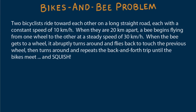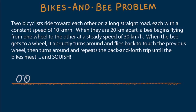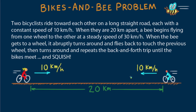Here's a problem that's a stumper for many people. Two bicyclists ride toward each other on a long straight road, each with a constant speed of 10 kilometers per hour. When they are 20 kilometers apart, a bee begins flying from one wheel to the other at a steady speed of 30 kilometers per hour.